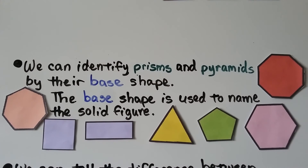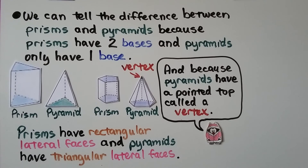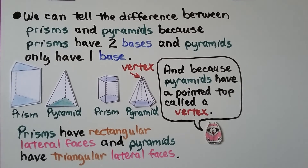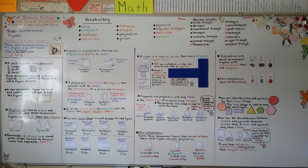So polyhedrons are three-dimensional figures with lateral faces that are polygons, and non-polyhedrons have curved surfaces. We can identify prisms and pyramids by their base shape, which is used to name the solid figure. We can tell the difference between prisms and pyramids because prisms have two bases and pyramids have only one base. Pyramids have a pointed top called a vertex or apex. Prisms have rectangular lateral faces, and pyramids have triangular lateral faces. Polyhedrons are named after their bases.